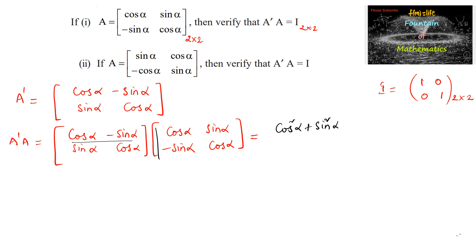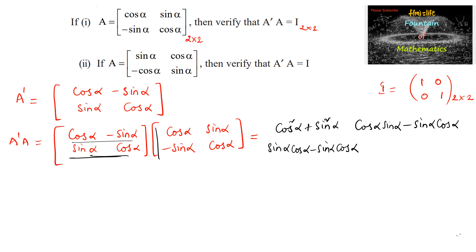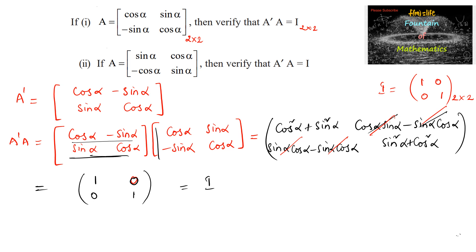For the first row with the second column: cos alpha into sin alpha and minus sin alpha into cos alpha cancel to give 0. For the second row with the first column: sin alpha cos alpha minus sin alpha cos alpha gives 0. And sin squared alpha plus cos squared alpha gives 1, so we get the identity matrix — a 2 by 2 matrix. Therefore, A dash into A is equal to I.